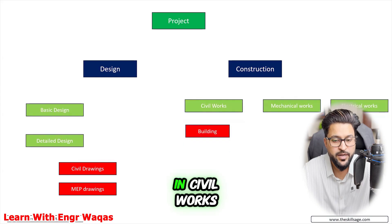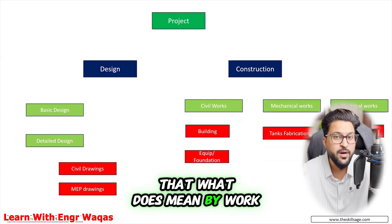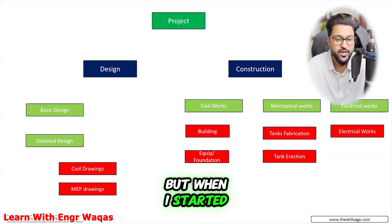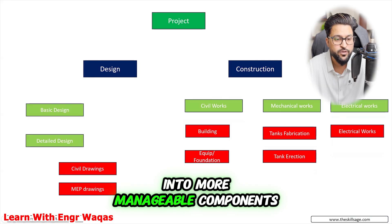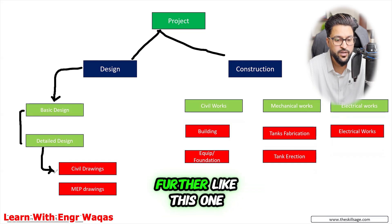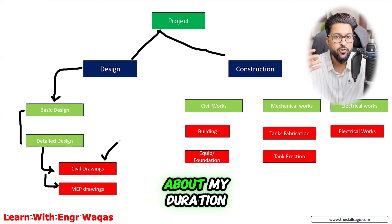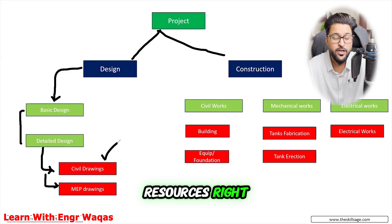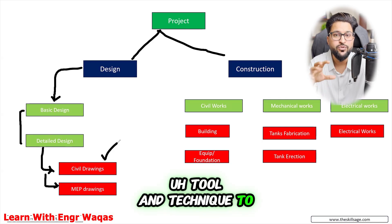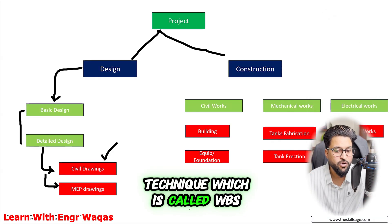Within civil works you can find building elements. When I was at the top project level, I had very little information, but when I started breaking down all this information into more manageable components — project into design and construction, then further — at the lowest level I'm more confident and have more understanding about work, duration, cost, and resources. That is the purpose of creating a WBS — it is a very important tool and technique to document your project scope inside Primavera P6.